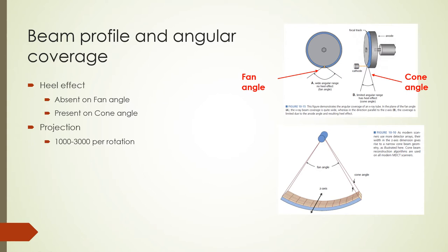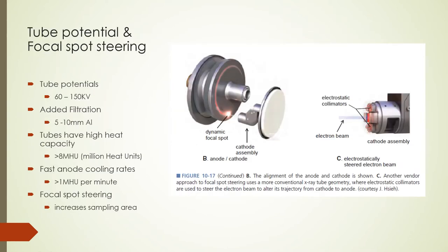There are 1,000 to 3,000 projections acquired per rotation. CT tubes typically operate in the 80 to 140 kV range, but some manufacturers have introduced 60 kV to 150 kV options. 60 kV can be used to reduce dose to smaller patients and 150 kV can be used for increased penetrability of larger patients. The CT beam is heavily filtered with added filtration in the 5 to 10 mm aluminum range, making the beam very hard compared to radiographic beams.